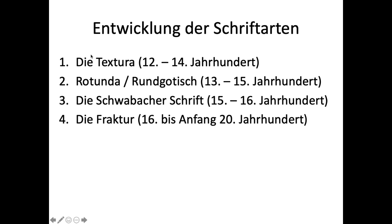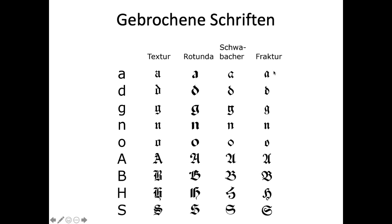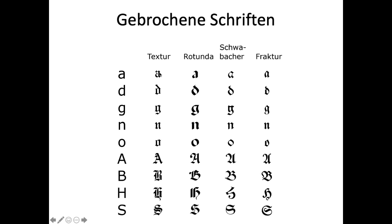The most important font variants are: die Textura, from the 12th to 14th century; Rotunda or Rundgotisch, 13th to 15th century; Schwabacher Schrift, very important in the Reformation era; and then Fraktur, which came at the end of that period and was popular for many centuries. You can see examples of each — Textura, Rotunda, Schwabacher, and Fraktur. The last one, Fraktur, is probably the most familiar because it was used the longest and most recently. Rotunda is the most different from the others, and Schwabacher is wider while Fraktur is skinnier.